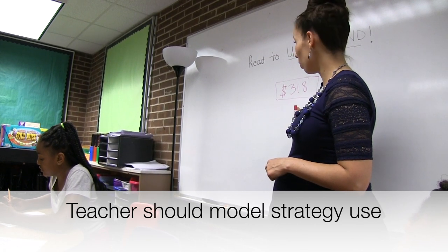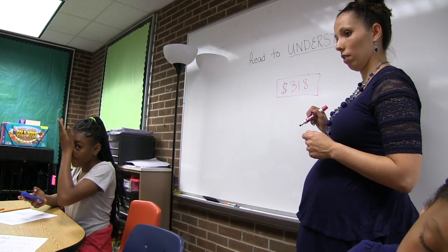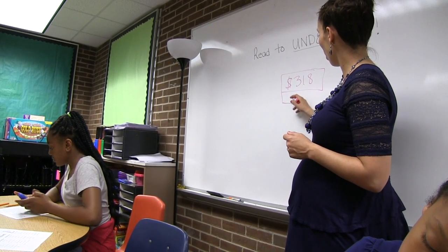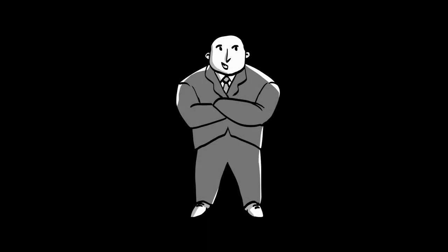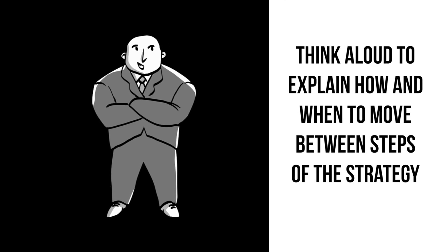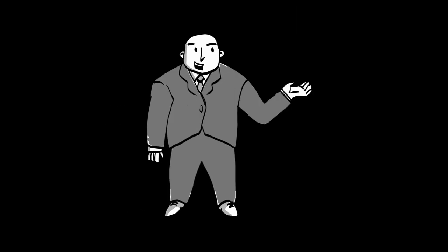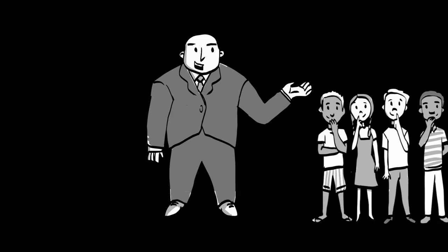Another key part of explicitly teaching the components of a strategy is for the teacher to model its use. In order for students to see the purpose and application of a strategy, the teacher should provide models, likened to the 'I do' portion of explicit instruction. One effective way a teacher can model a cognitive or metacognitive strategy is by using the think-aloud approach — providing a verbal description of completing each step and demonstrating when to move on to the next step. Students observe the teacher using a strategy while narrating the steps, which supports students' metacognitive ability by helping them understand how to think about their thinking.